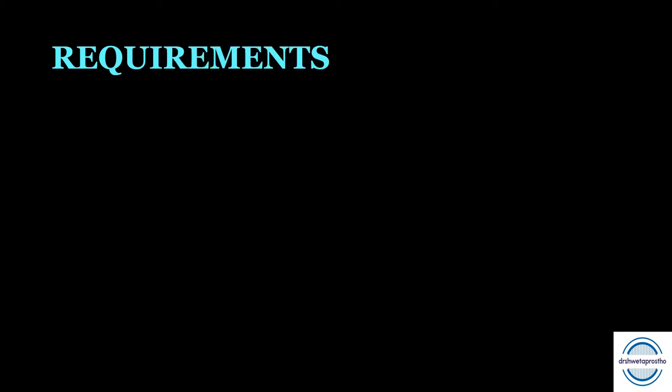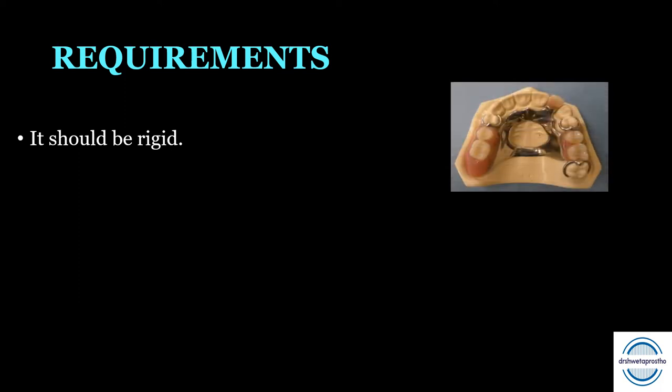Now we come to the requirements of the major connector. The first and very important requirement is that the major connector should be rigid, because it is the main connector. If it is rigid, then only the other components of the framework will be in their place and will work effectively. If it is not rigid, it will cause trauma to the underlying tissue — the gingiva and the periodontal ligament — and the other parts will also not function effectively.